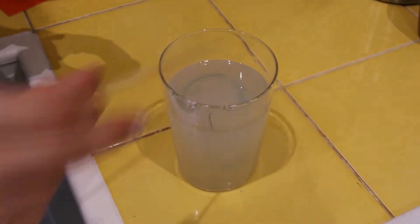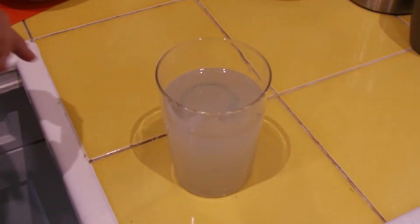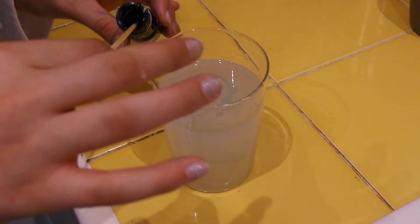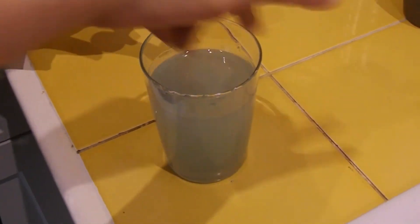To make rock candy, you need to make saturated sugar water so that the sugar sticks to the stick and forms sugar crystals. This method is called precipitation. The other is evaporation.